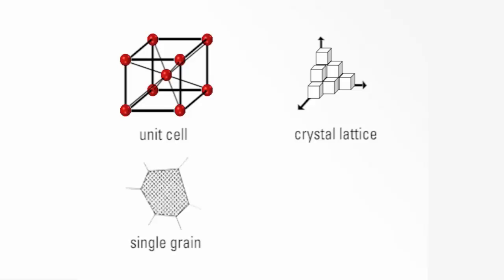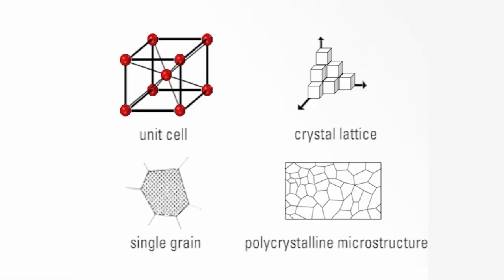These unit cells, when stacked together, form the crystal lattice, and a larger arrangement of crystal lattice corresponds to a grain. This single grain is embedded in other grains and eventually forms a polycrystalline microstructure.